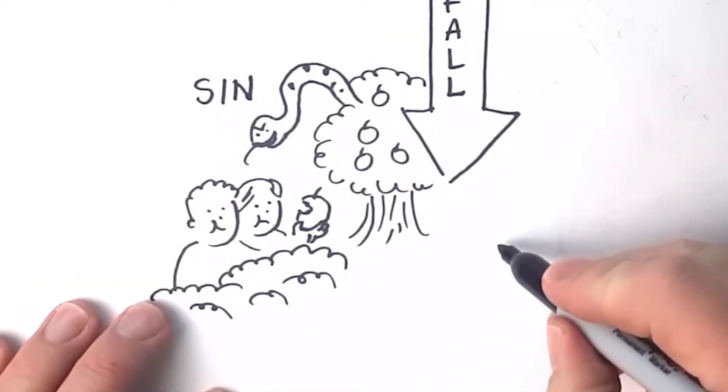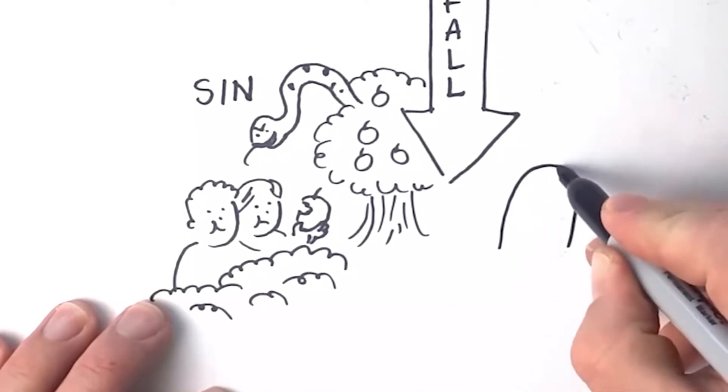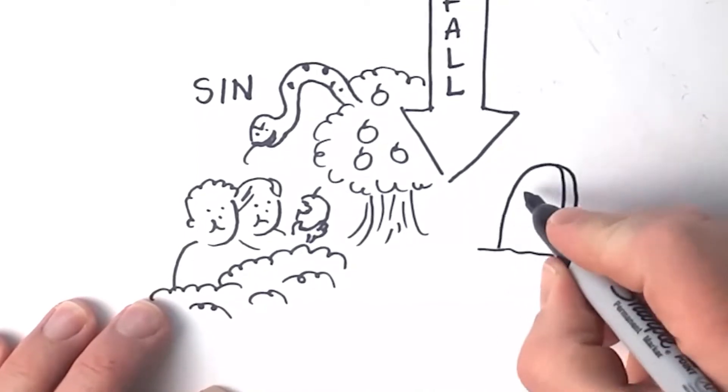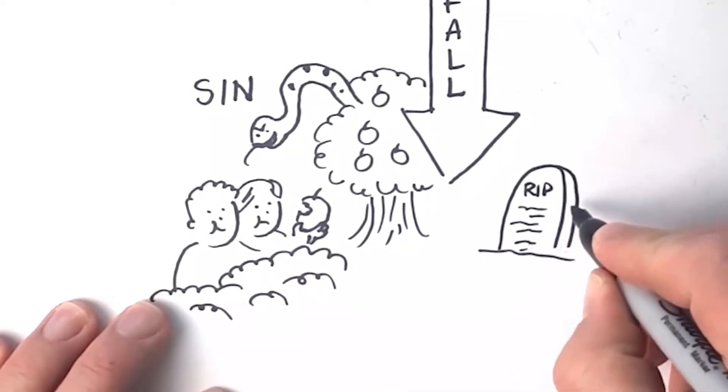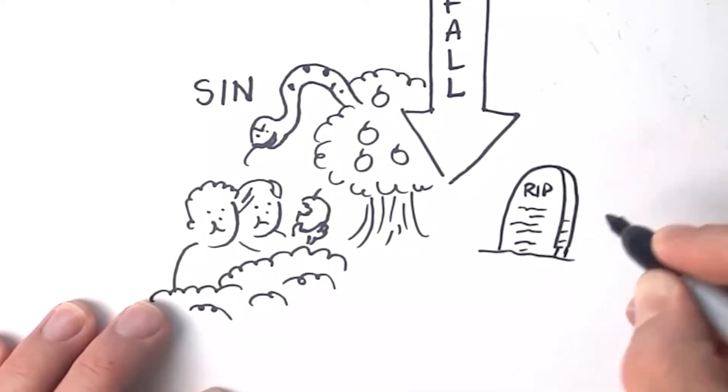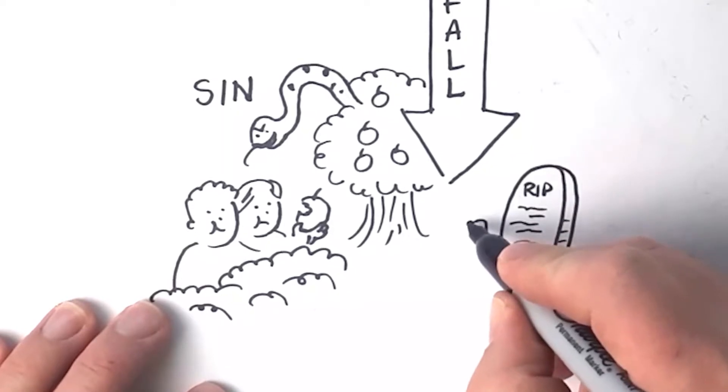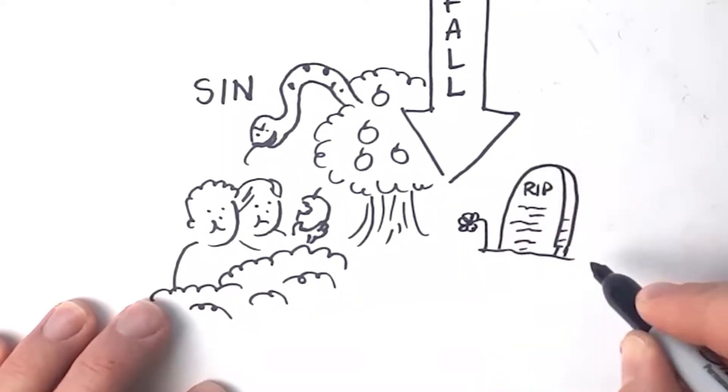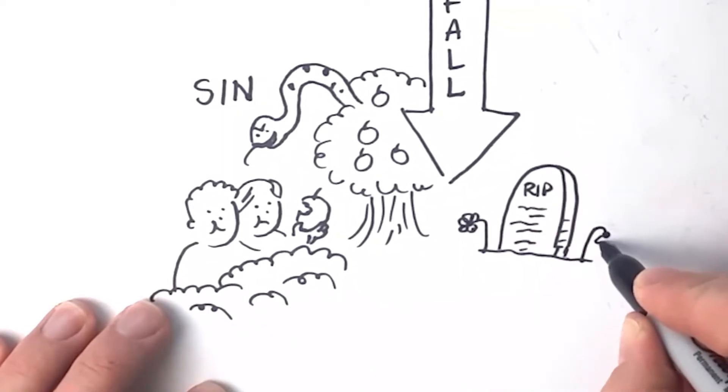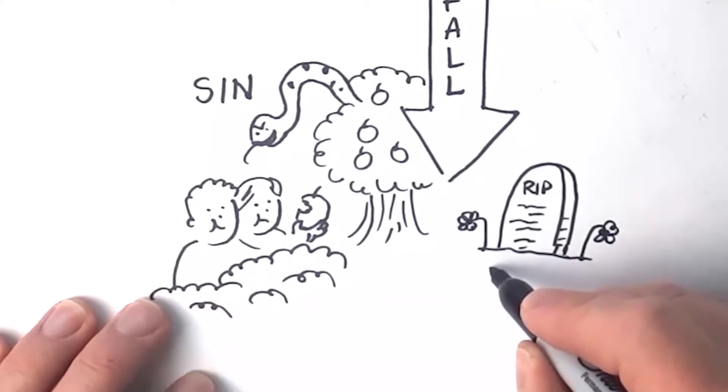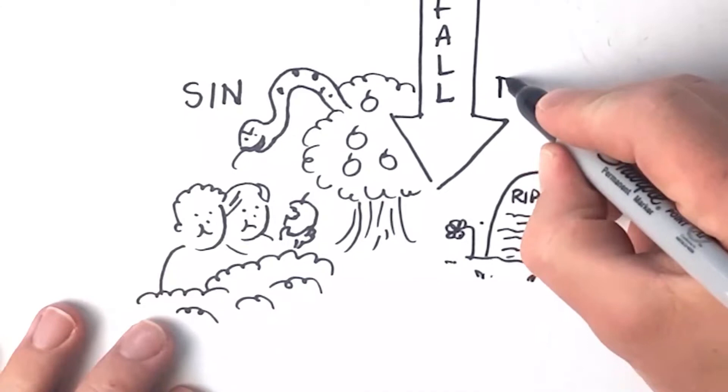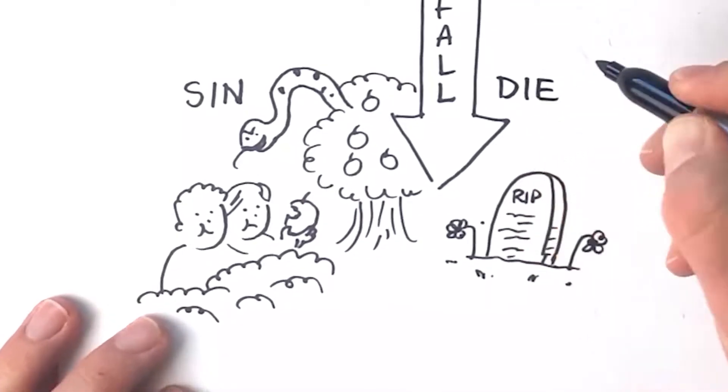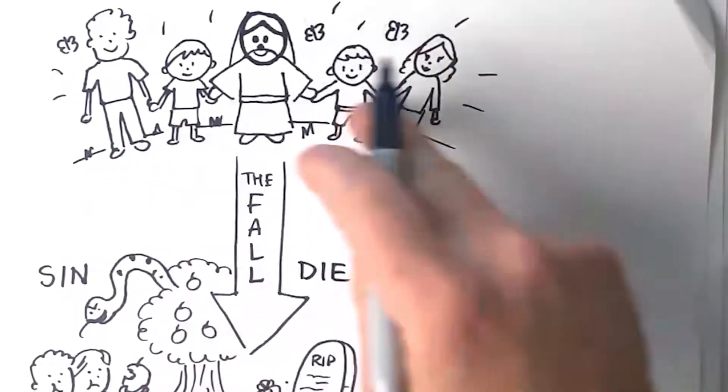Now, the other problem that prevents us from living forever is that, you guessed it, all of us die. This is a tombstone. All of us will die one day. Our bodies will stop working and our spirits will leave our body and we will die. So these two problems, we all will die and we all sin. Those two things prevent us from living with Jesus in heaven.